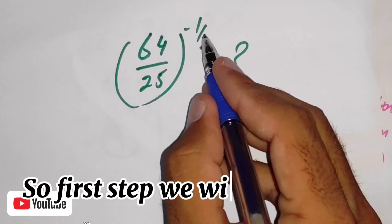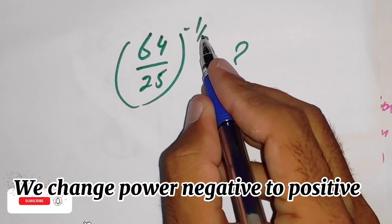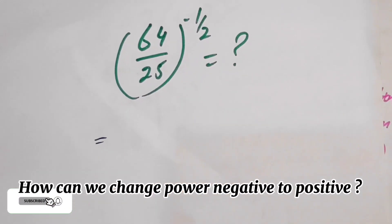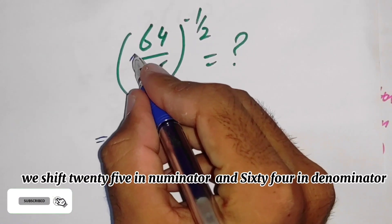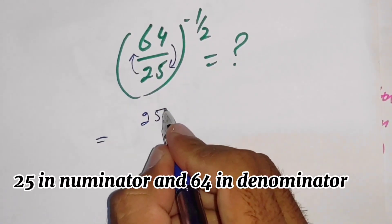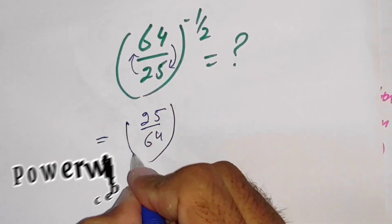The first step we will perform is to change the power negative into positive. How can we change power negative into positive? We shift 25 in the numerator and 64 in the denominator, so 25 in numerator and 64 in denominator. The power will be changed into positive.